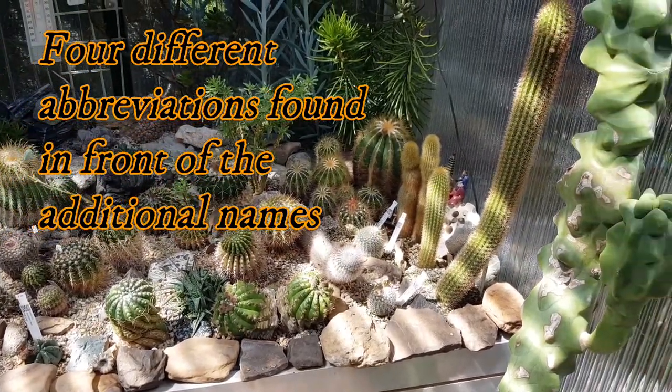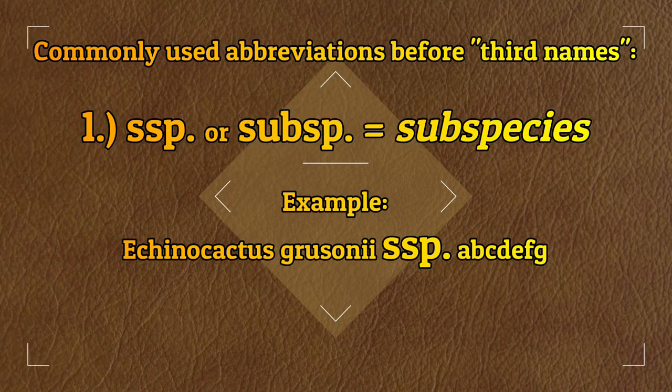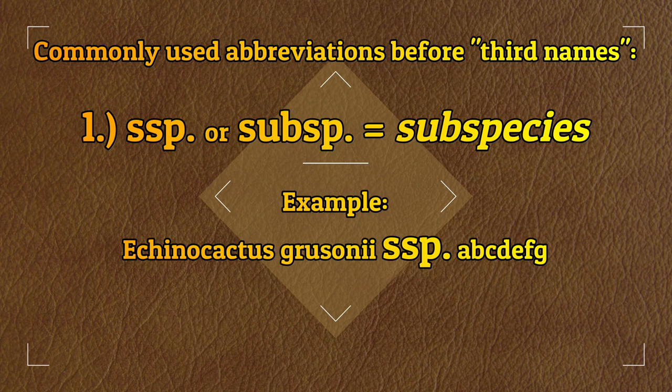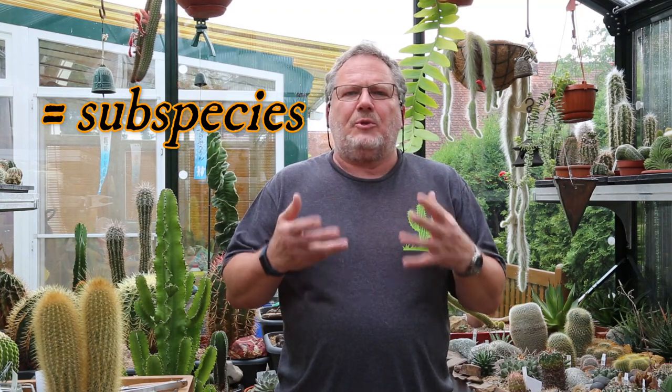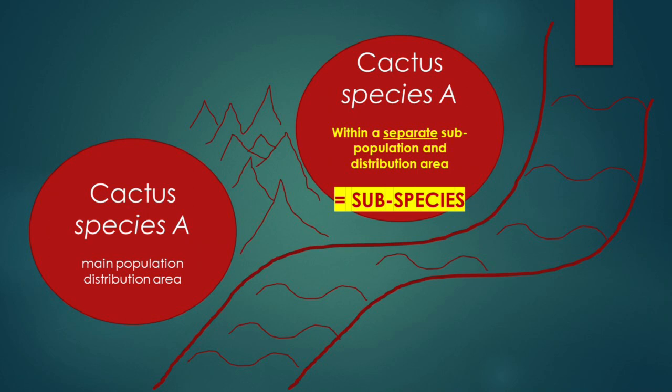Generally there are four different abbreviations used in front of that additional third name. Number one: if it says SSP. or sub SP. that stands for subspecies — a population of plants that occurs as a distinct separate community, geographically separated from the main species population. So a separate growing location to the main growing location of the species.